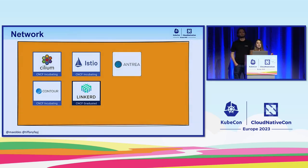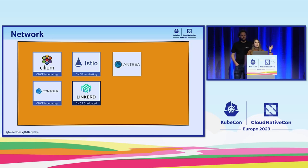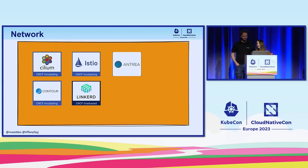For networking, we have Istio and Linkerd, which are specifically for service mesh — though they're more than just networking, overlapping into security and observability as well. There is also Cilium, which is based on eBPF. Instead of having a sidecar container running in every pod like Istio and Linkerd, Cilium interacts at the node level and can do things like service mesh and observability. There's also Antrea, which implements the CNI — container network interface — and the Kubernetes network policy, helping with network connectivity and security for pod workloads.